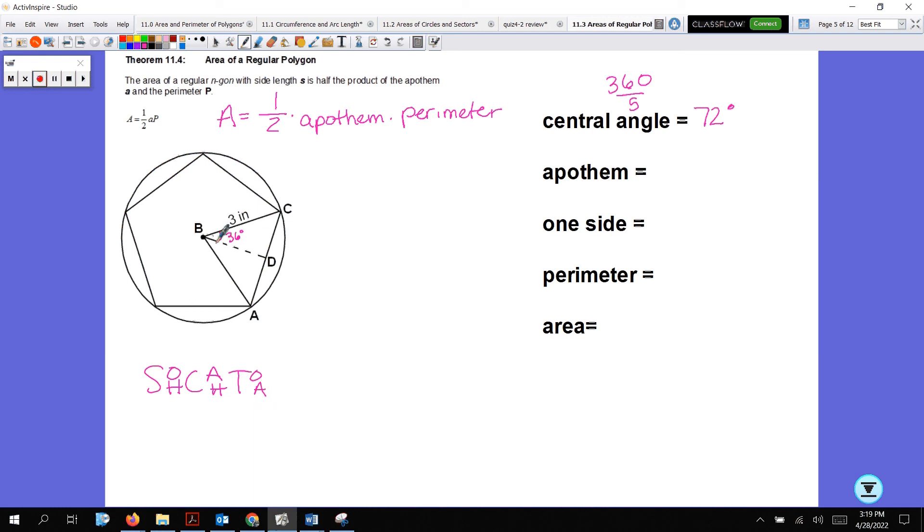I'm going to write SOHCAHTOA down here in case you forgot. I have the hypotenuse, and this is perpendicular to the base. So I have the hypotenuse, I'm looking for adjacent. Adjacent hypotenuse is cosine. Cosine of 36 degrees equals x over 3. x equals 3 times cosine of 36. That is how we're going to get the apothem, and round to the nearest tenth. It's going to give us 2.4.